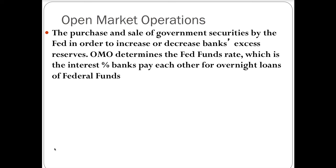The final tool is open market operations — the purchase and sale of government securities by the Fed in order to increase or decrease banks' excess reserves. It's the buying and selling of bonds by the Federal Reserve. Open market operations determines the Federal funds rate, which is the interest rate that banks pay each other for overnight loans of Federal funds. The discount rate is the rate at which banks borrow from the Federal Reserve, while the Federal funds rate is set by open market operations.